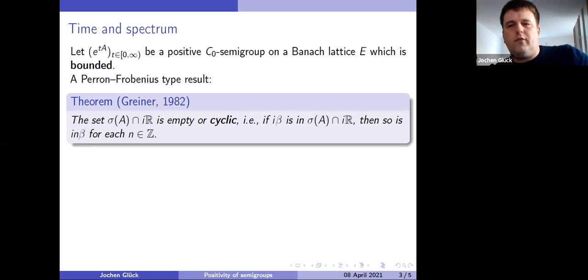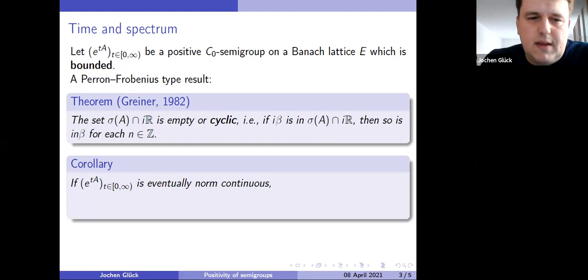Now this is a beautiful result. But apart from being beautiful, maybe it is also useful. And here's an example of why it is useful. Corollary: many semi-groups in applications are eventually norm continuous. For eventually norm continuous, we have additional information about the spectrum. Namely, if we intersect the spectrum of A with a bounded vertical strip in the complex plane, then this intersection is always bounded. That's a general fact about eventually norm continuous semi-groups. In particular, the set here is bounded for eventually norm continuous semi-groups. But if you take a non-zero number there, then all multiples are again in the set, integer multiples, which contradicts the boundedness. So this means if you have eventual norm continuity, this intersection of the spectrum of the imaginary axis actually has to be zero. It cannot be non-trivial.